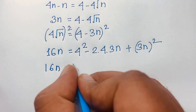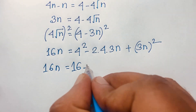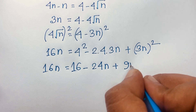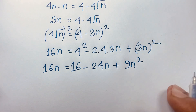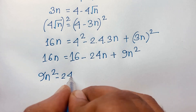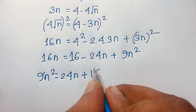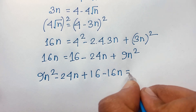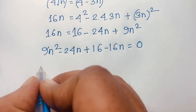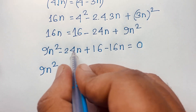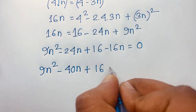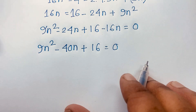So 16n = 16 - 2·4·3n + 9n², which is 16 - 24n + 9n². Rearranging: 9n² - 24n + 16 - 16n = 0, giving us 9n² - 40n + 16 = 0.